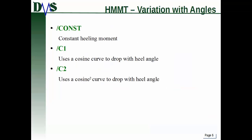The heeling moment can also vary with your heel angle. There are three different options you can add to the HMMT command to have it vary with angle. You can add the constant option, which just forces it to be a constant heeling moment that doesn't vary with angle. The C1 option creates a cosine curve, so the heeling moment will drop off with heel angle by the cosine of the angle. Or the C2 option, which is the cosine squared curve, drops off with the cosine squared of the heel angle.